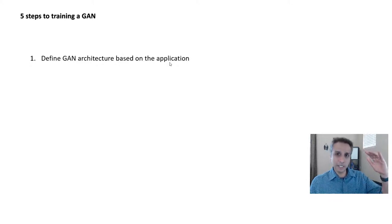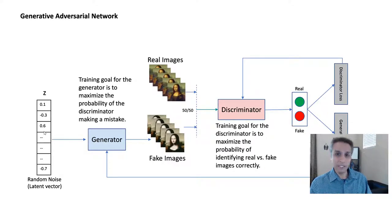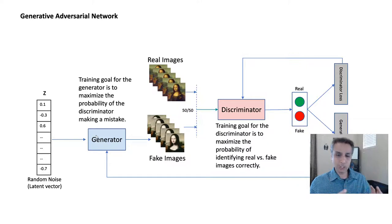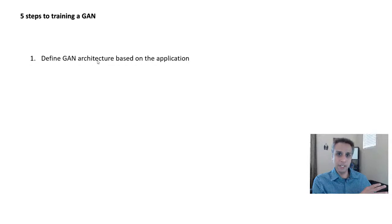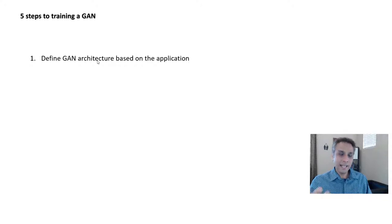Step one: define your GAN architecture based on the application. For example, your generator can output 32x32x3 images by starting with a dense layer, reshaping into two dimensions, and adding convolutional layers. The GAN is just a general concept — a generator and a discriminator — and the architecture depends on your specific application. For instance, if you want to generate images from a segmented mask, your generator can have a U-Net architecture.